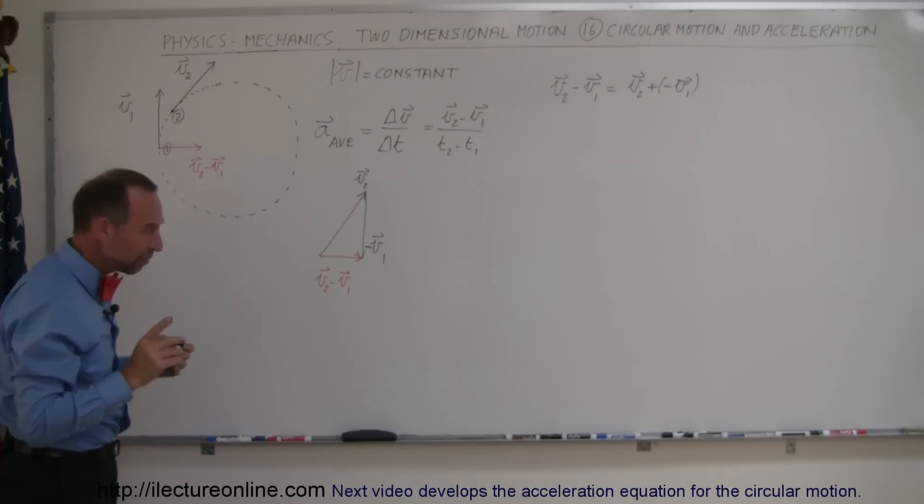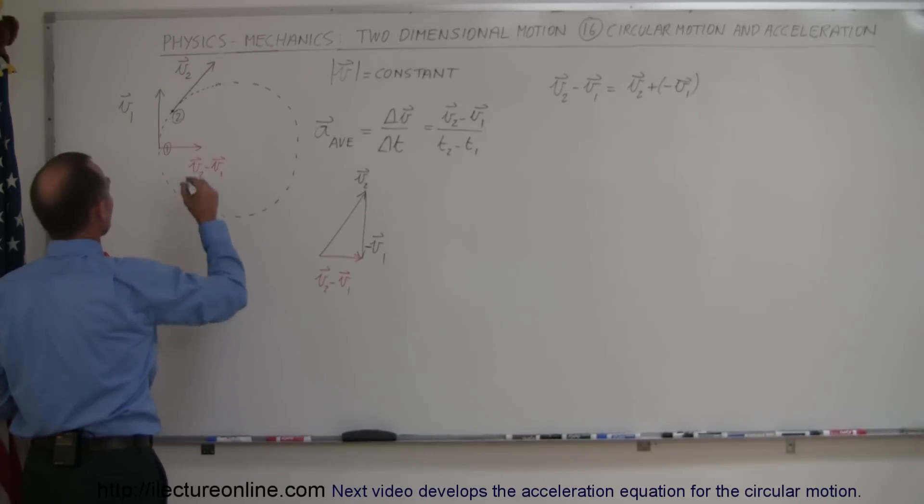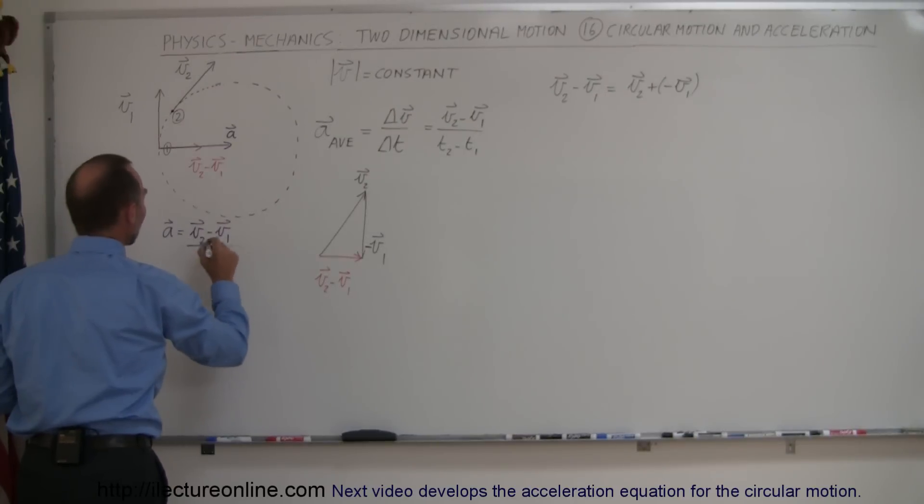So this is the, the acceleration vector is not equal to this. The acceleration vector would be, let's say, equal to this. That would be the acceleration vector because the acceleration vector is pointing the same direction as this v2 minus v1, but it's also divided by the difference in the time between those two points.